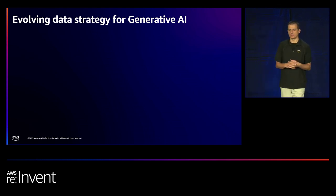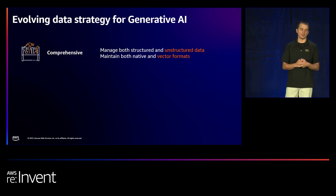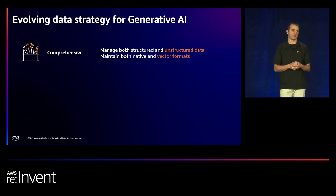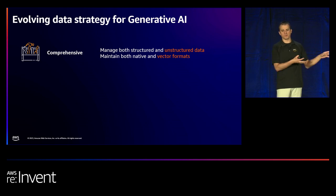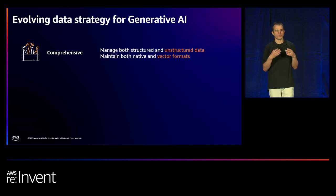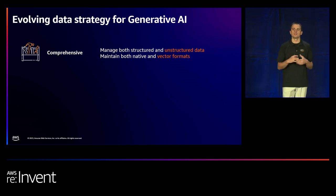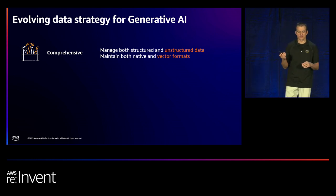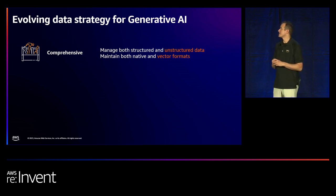Your data strategy has to evolve too, on several dimensions. You now have to think about storing both structured and unstructured data. Previously, most customers ingested unstructured data, extracted some metadata, and stored it — but it wasn't part of ongoing operational or governance processes. With generative AI, that raw data in as raw a format as possible is actually valuable, because it gives you content nuance and meaning for context. So you need to extend your data strategy processes around unstructured data, and store data in both native and vector formats.